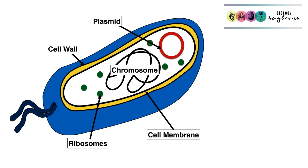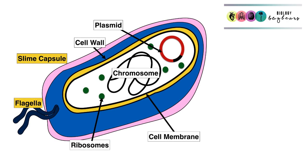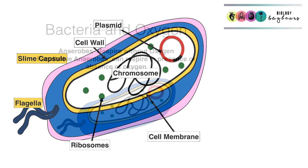In addition to this, sometimes bacteria will have tail-like structures called flagella for movement, and in addition they sometimes have this slime capsule. This slime capsule is there for added protection.